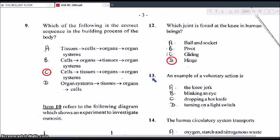Question 13. An example of a voluntary action is, is it A, the knee jerk, B, the blinking of an eye, C, dropping a hot knife or D, turning on a light switch? So remember, voluntary action requires conscious control. So it's something that you choose to do. So it would have to be D, turning on a light switch. All the other options are reflex actions, or quick actions, or involuntary actions, which does not require any thought.